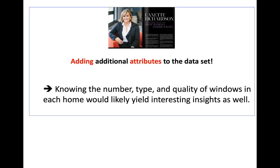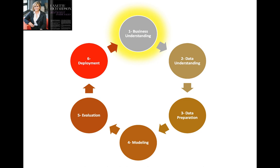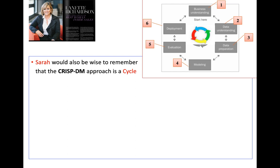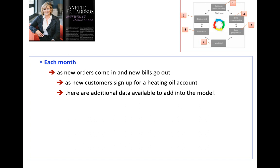We've finished the whole case and come up with advice for Sarah. As we said before, data mining is not a one-time cycle — it's continuous. It's up to her to go back and collect more data to get a better model in future. The CRISP-DM model is a cycle: perhaps the next step would be for her, each month as new orders come in, to create new customer accounts in her data and start building deeper, higher-granularity data about her business.